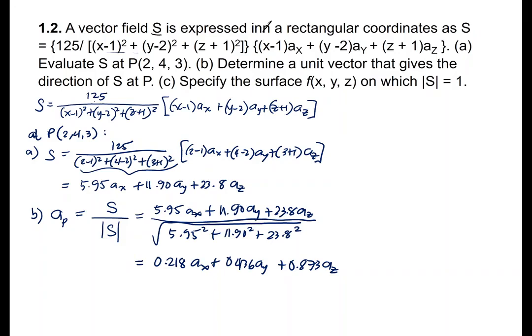Problems A and B are straightforward — you just plug in the coordinate values. Problem C is a bit more challenging: specify the surface F(X,Y,Z) on which the absolute magnitude of S equals 1. This surface could be a sphere, rectangular prism, or anything — but by observation, given the rectangular coordinates, the surface this problem deals with is a sphere.